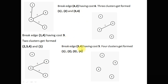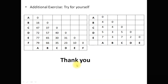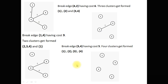After that we break edge 3-4 having cost 5 and 4 clusters are formed: {1}, {2}, {3}, {4}. So here we first break the edge with cost 9, then we break the edge with cost 6, and after that we break the edge with cost 5 to get all points representing individual clusters.